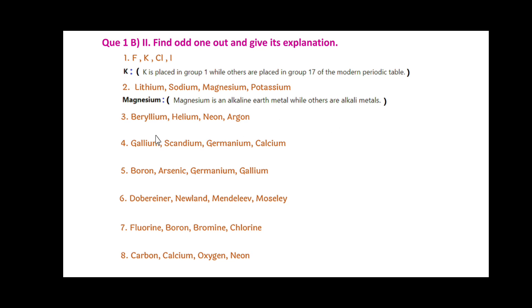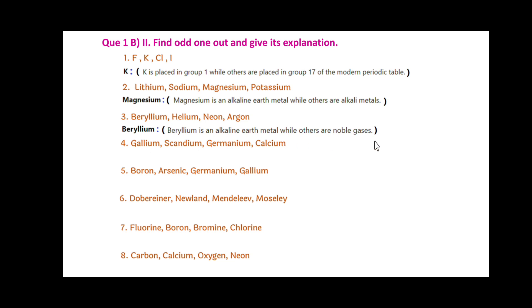Third: Beryllium, Helium, Neon and Argon. Among these, Beryllium is the odd one out. Since Beryllium is an alkaline earth metal, while others are noble gases — that is, Helium, Neon and Argon are the noble gases.